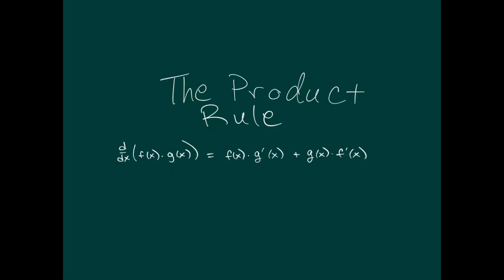The first rule we're going to cover is the product rule. This is the correct way to take the derivative of two functions multiplied together. You take the first function and multiply times the derivative of the second, then add that to the second function multiplied times the derivative of the first.